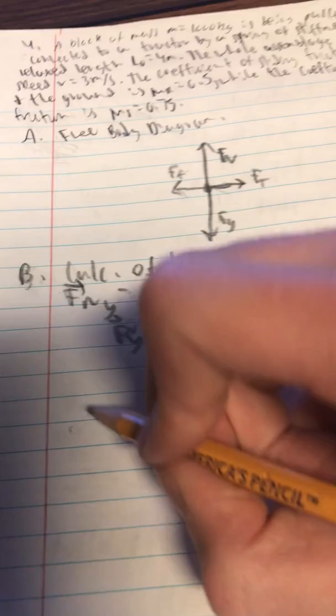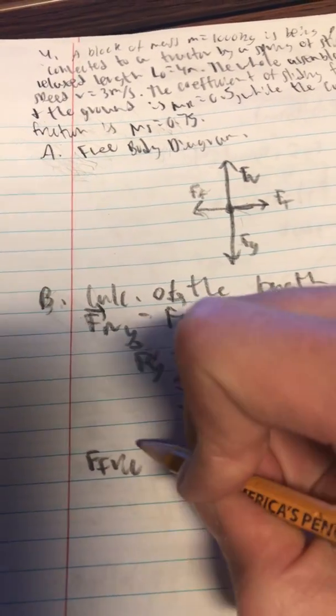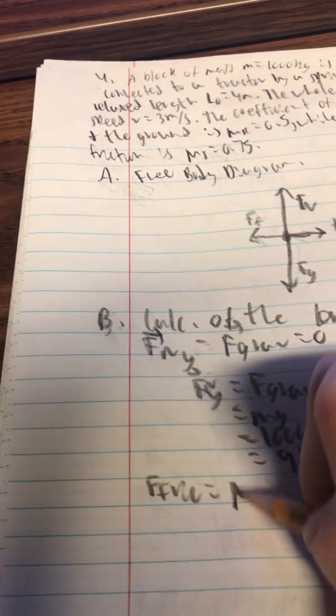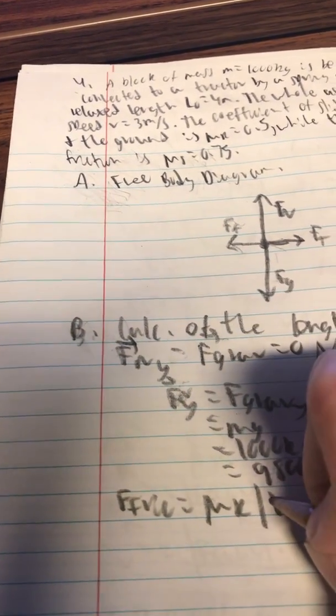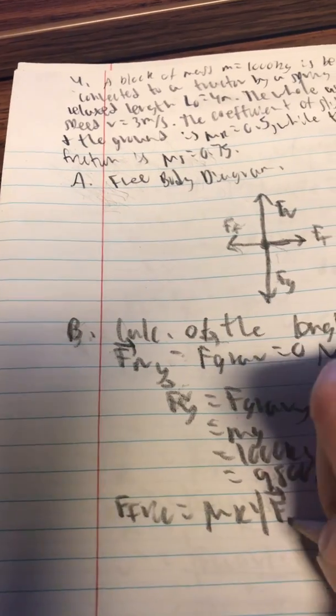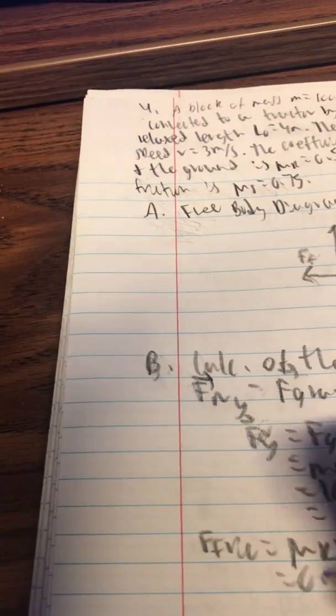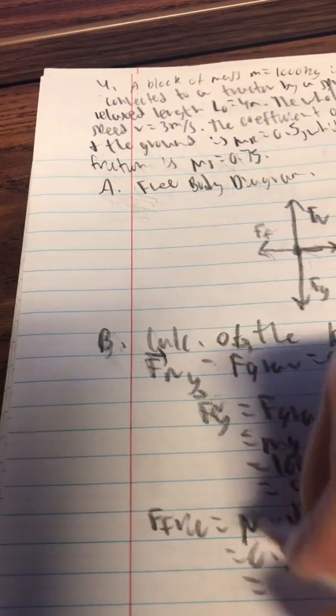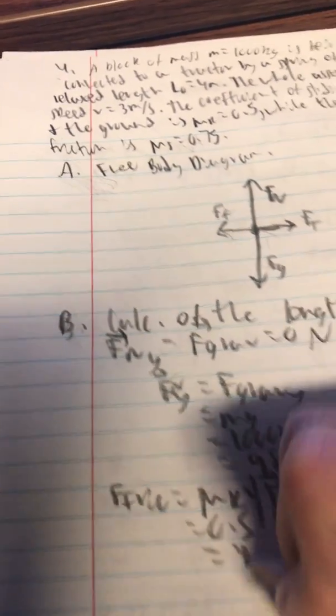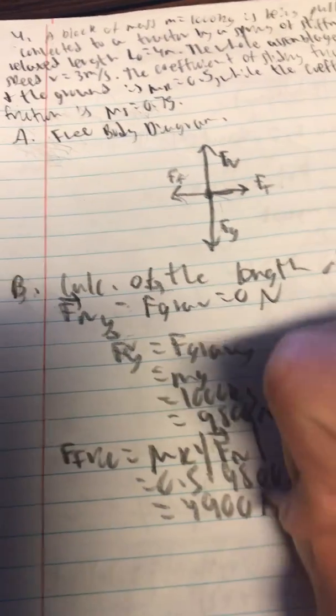And then we can calculate the force of friction which is going to be the coefficient of kinetic friction times the magnitude of the normal force. That will be 0.5 times 9800 newtons which is 4900 newtons.